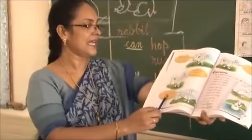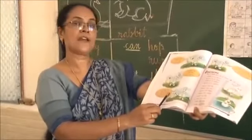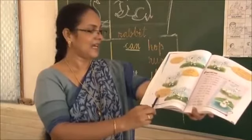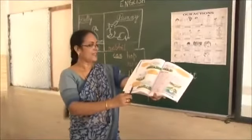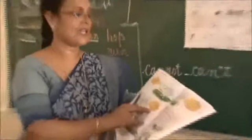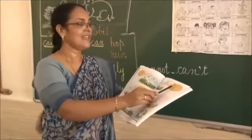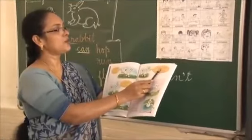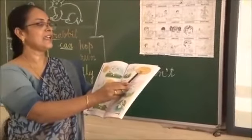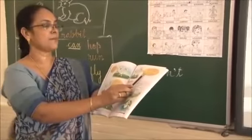You cannot fly. I cannot swim. Then the rabbit, Bunny, told the swan: yes, I cannot fly. You cannot run. You cannot fly. I cannot swim. You cannot run.